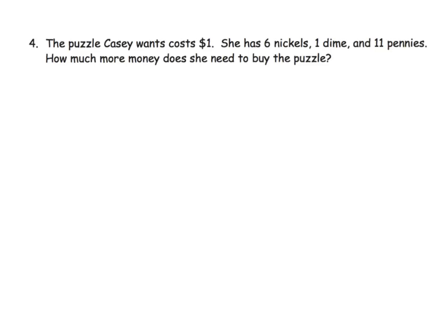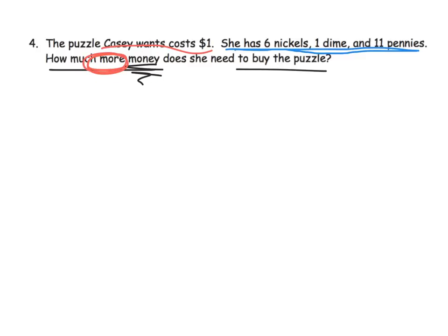The next problem: the puzzle that Casey wants costs a dollar, and she has six nickels, one dime, and 11 pennies. The question is, how much more money does she need to buy the puzzle? This is a classic example of where key words can mislead — 'how much more money' normally suggests addition, but in this case we don't necessarily have to add to get the answer. We could use subtraction. We want to be more thoughtful than just telling students to blindly look for key words. So let's first figure out how much money Casey has.